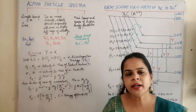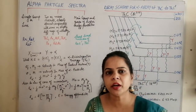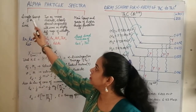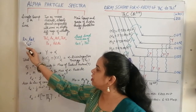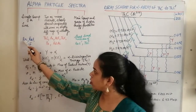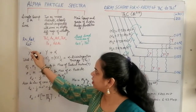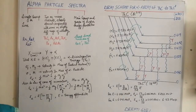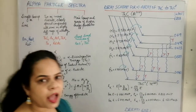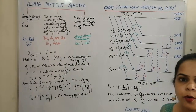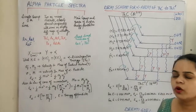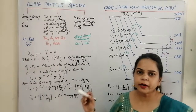In the single group or line spectra, only one type of alpha particle was emitted having one particular energy. Such spectra was called the single group or line. The examples of these were radon, radium A, and radon F. All the alpha particles released from these nuclei had only one particular energy.